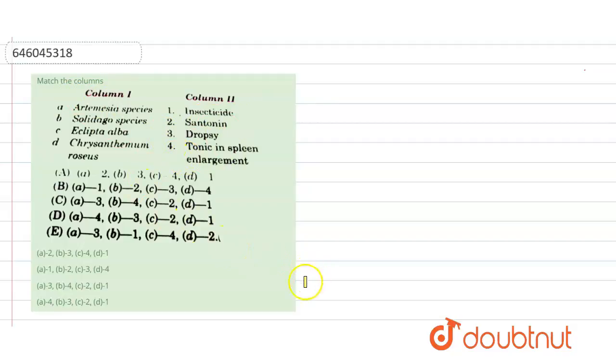So let's discuss. First of all, let's start with Artemisia species. So Artemisia, the common name is santonica, and the chemical extracted from this santonica is santonin.